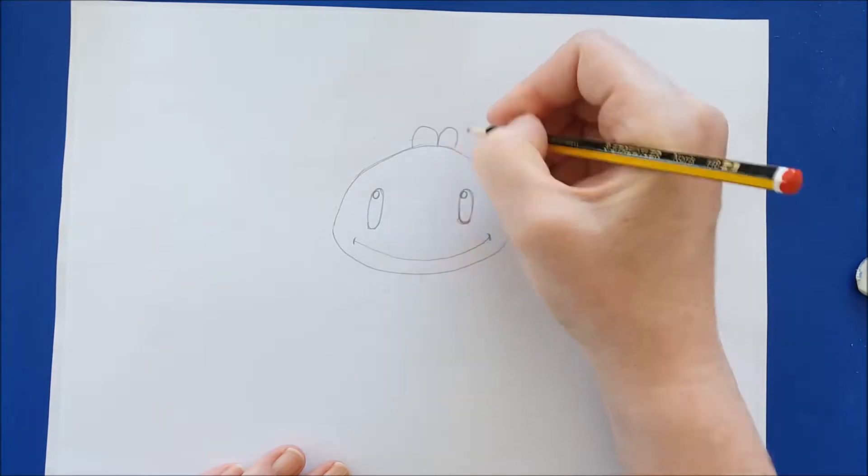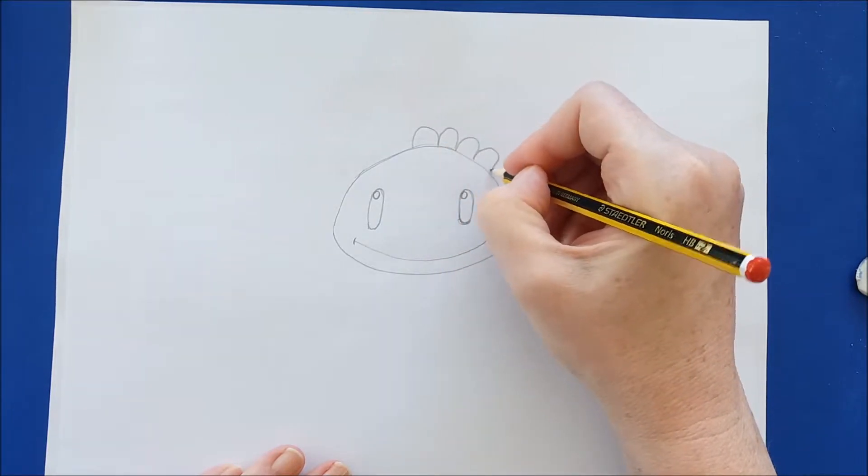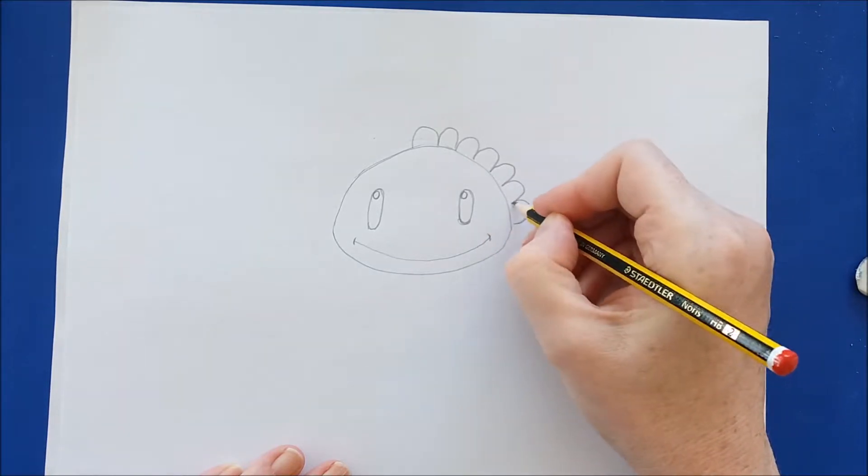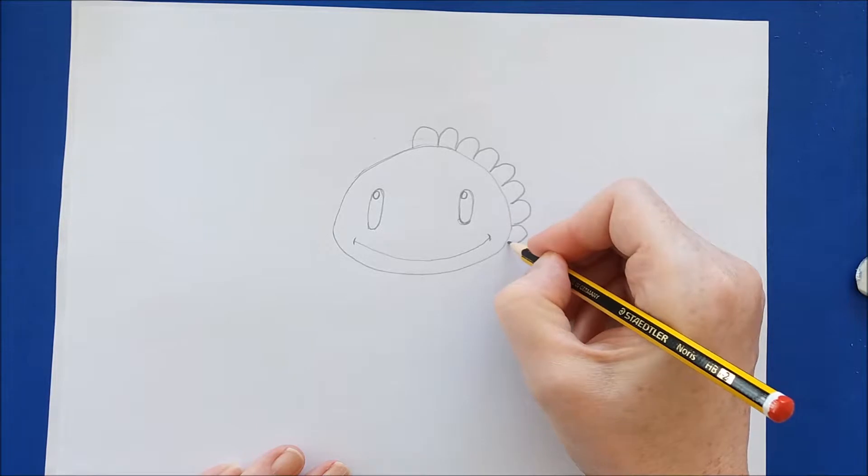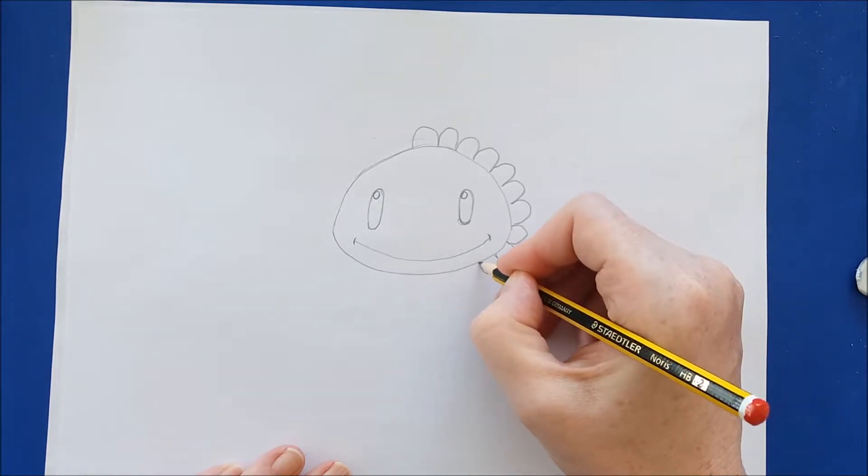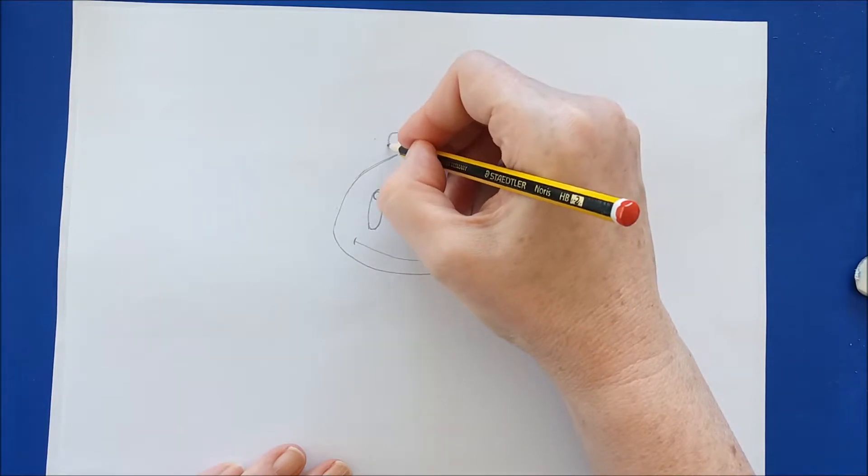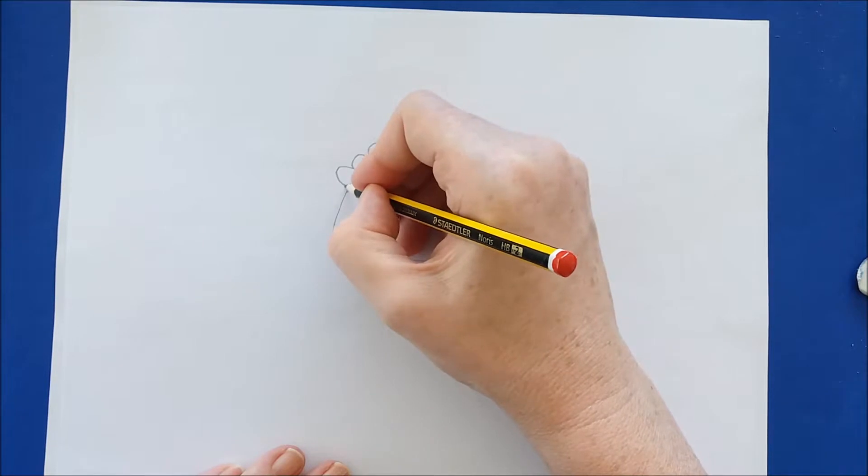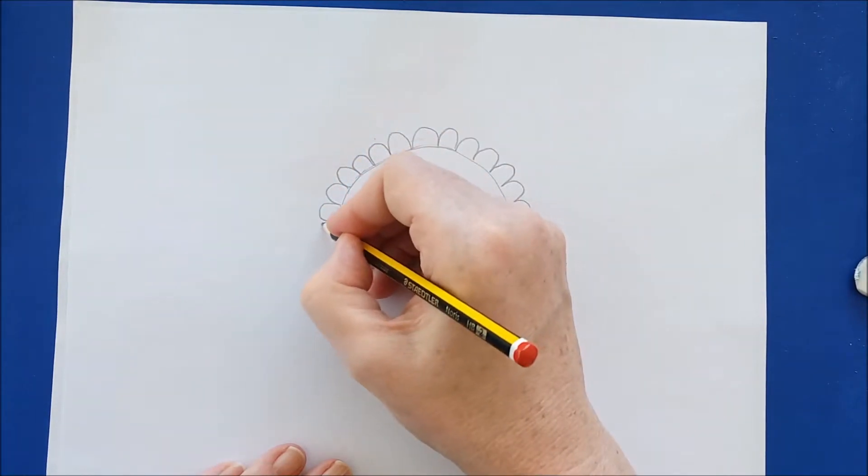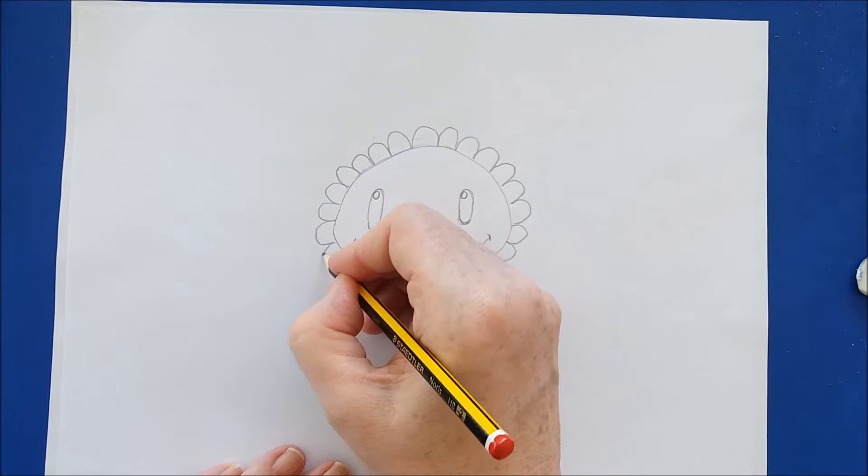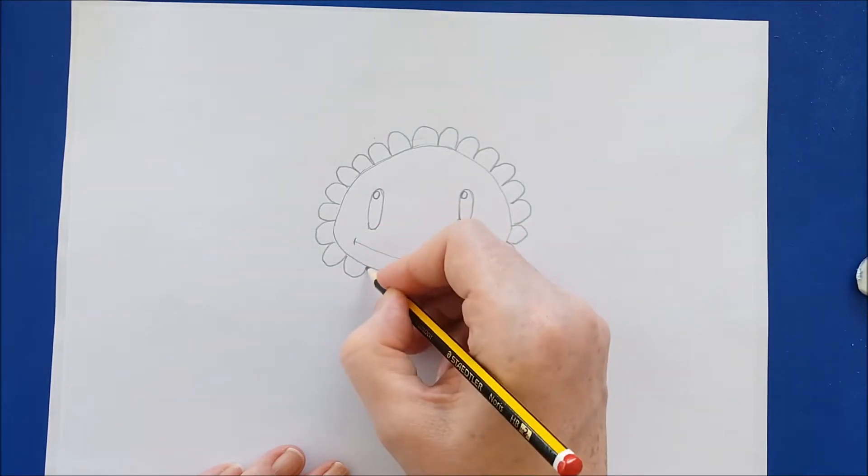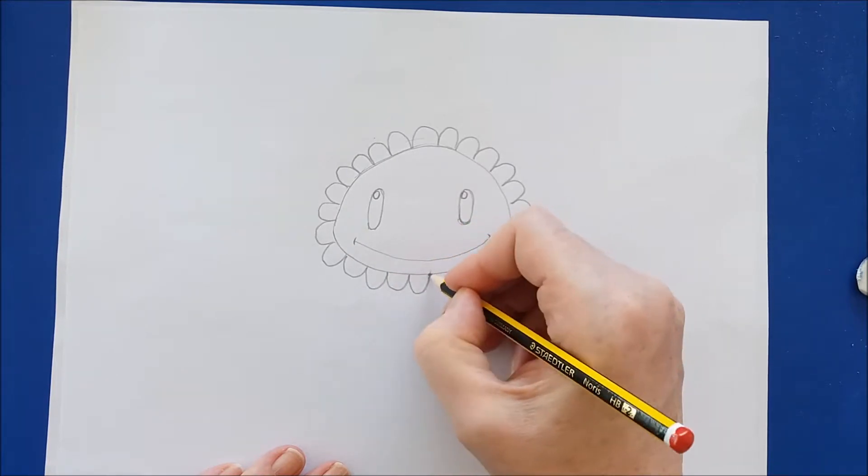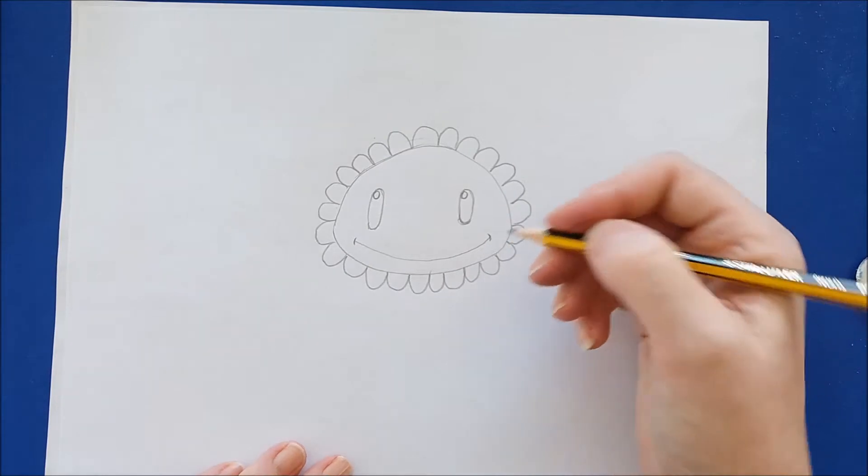Now let's draw the petals and the petals are a series of upside-down U's that go around the entire face of the flower. Try to make all of your petals about the same size and just continue making those upside-down U's until the entire face is framed with petals. We will eventually color these petals a bright yellow. There's the last petal.